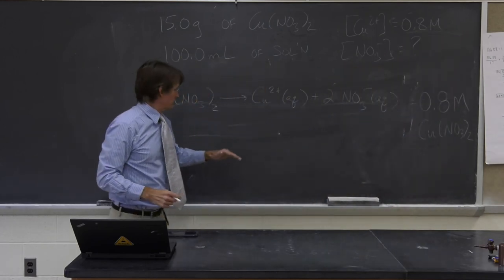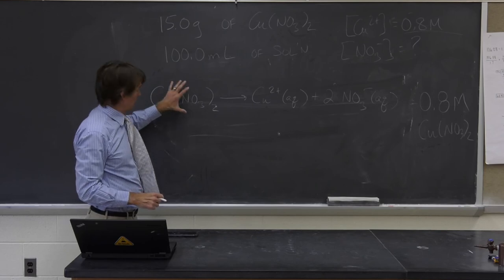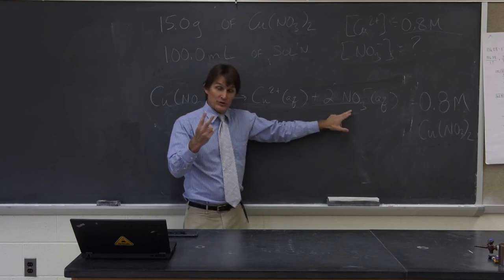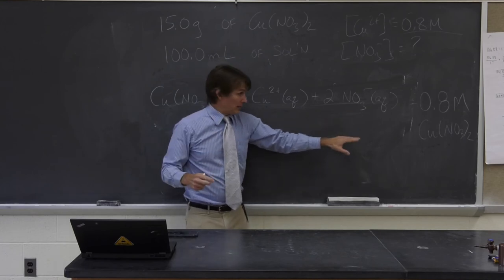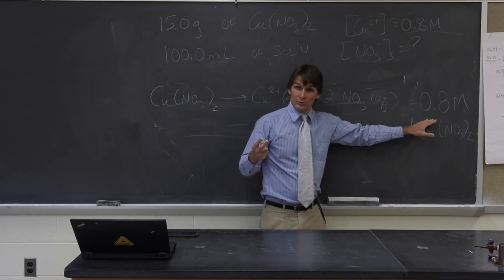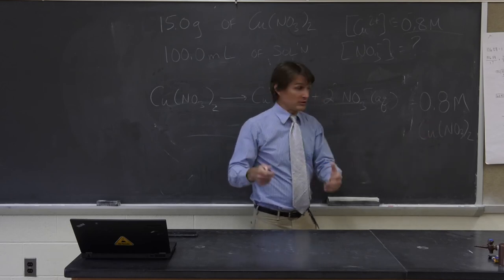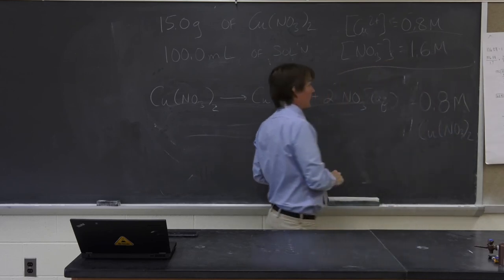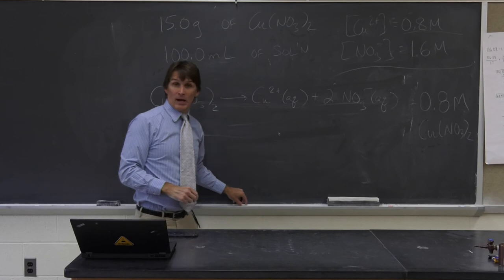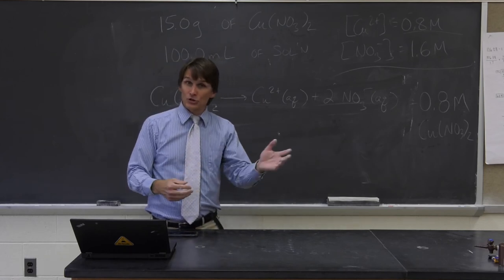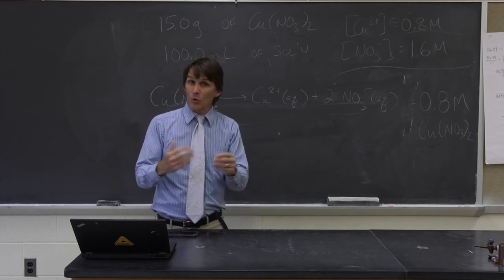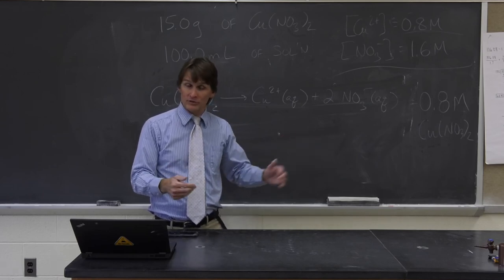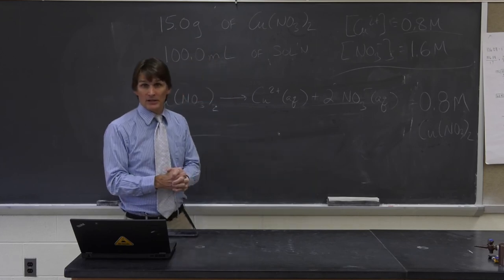In contrast, when the copper(II) nitrate dissolves, for every formula unit of the compound that dissolves I get two units of nitrate. So I need to take 0.8 and multiply it by 2. The concentration of nitrate ions in the solution is 1.6 molar. Keep in mind that for ionic substances that dissociate in water, ion concentrations scale with their stoichiometric ratio. Covalent substances that remain as molecules won't do this, but you need to keep this in mind for ionic substances.